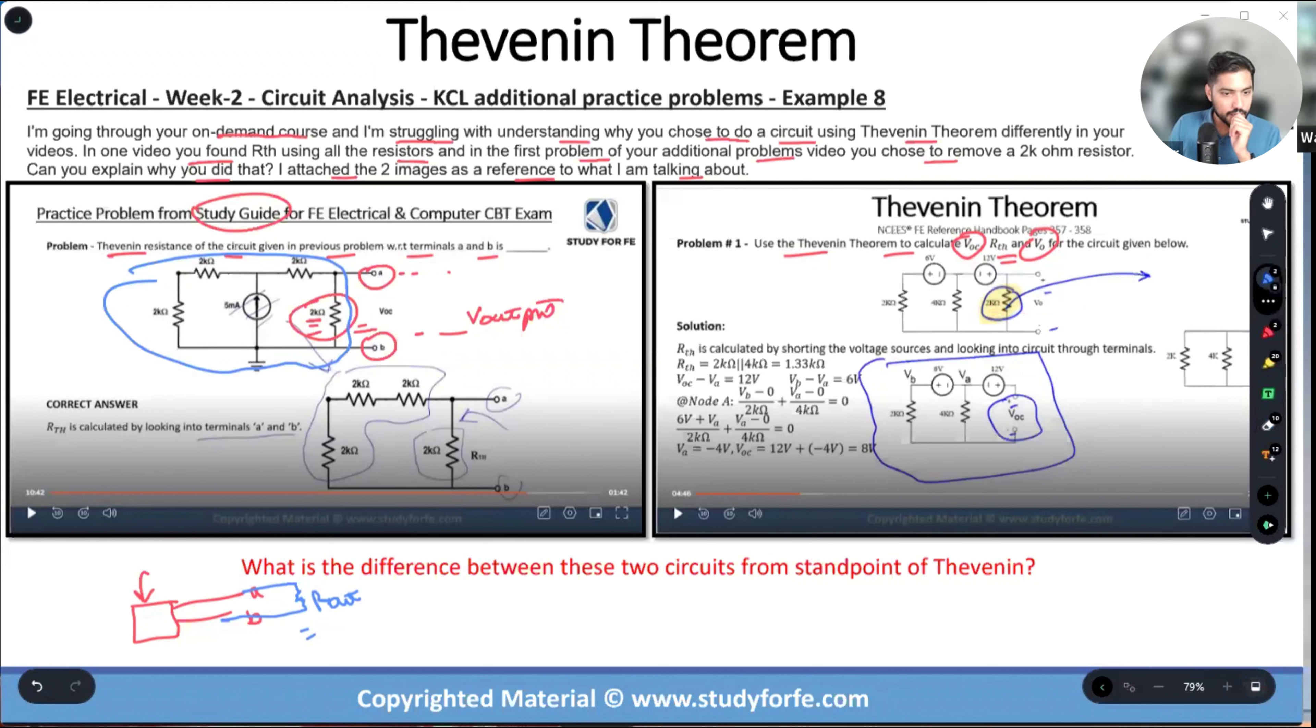So now if this is my output resistor, then what I need to do is I need to take it outside, remove it, and then introduce the terminals to look into the circuit. And that's why what I did in the first step is I took this outside and then I created these terminals through which I'm going to be calculating my voc and R Thevenin.